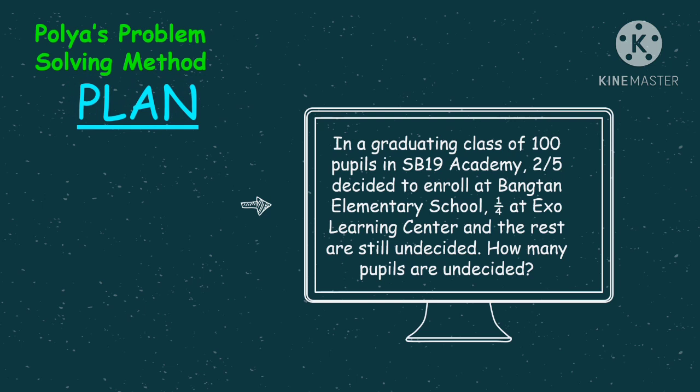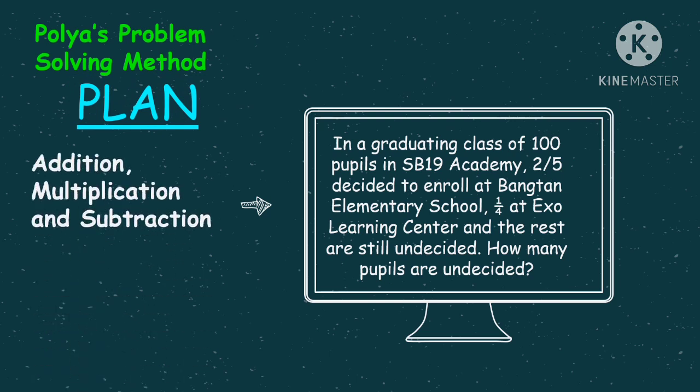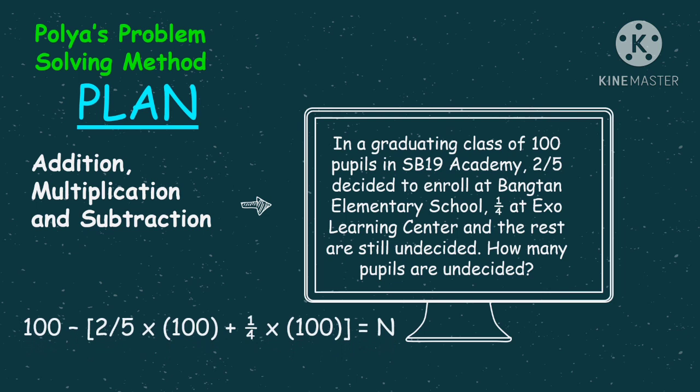The second step is to plan. The operations to be used are addition, multiplication, and subtraction. The number sentence will be: 100 minus (two-fifths times 100 plus one-fourth times 100) is equal to N.